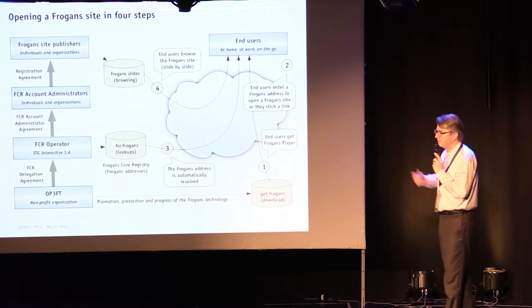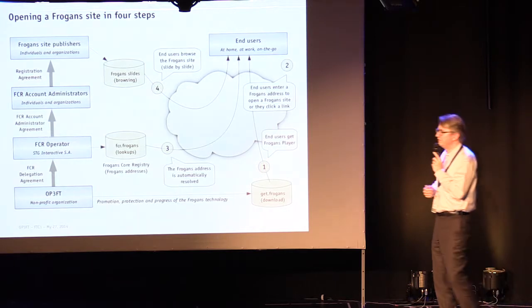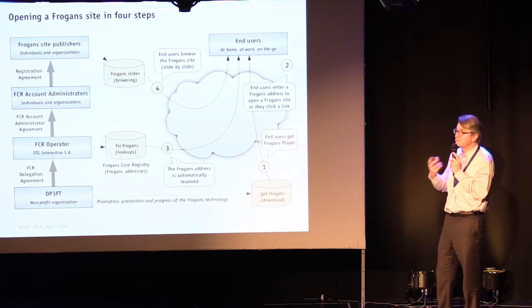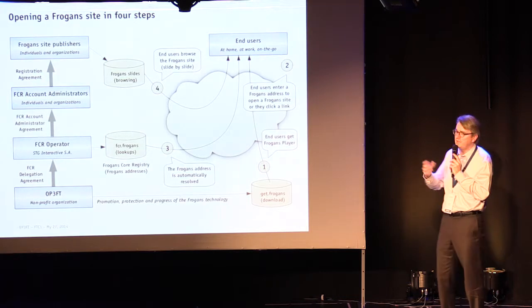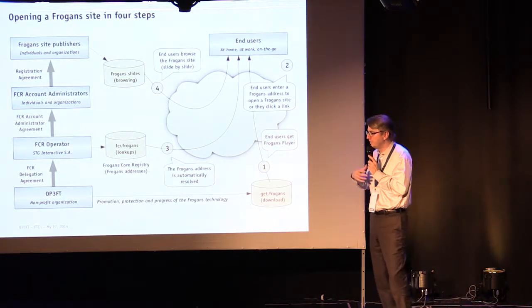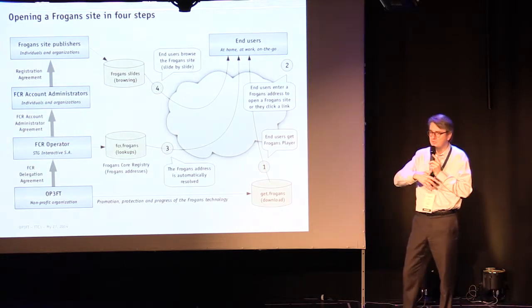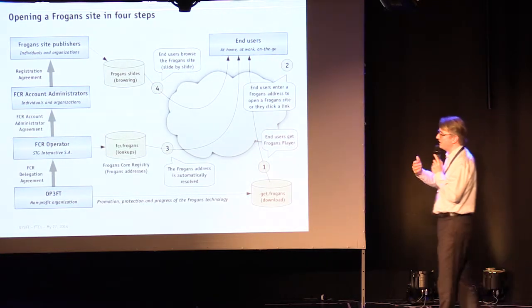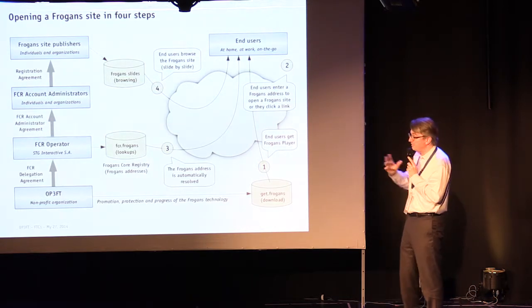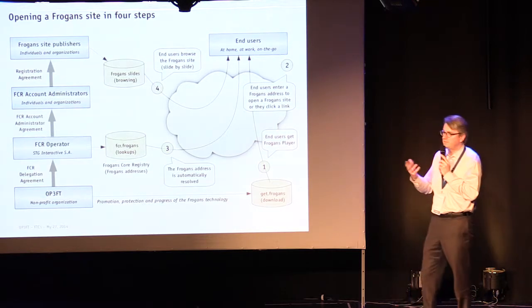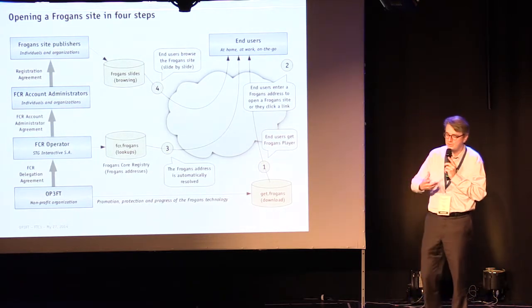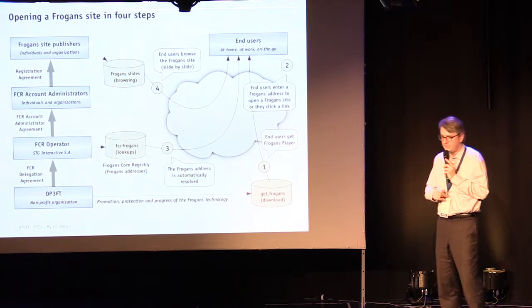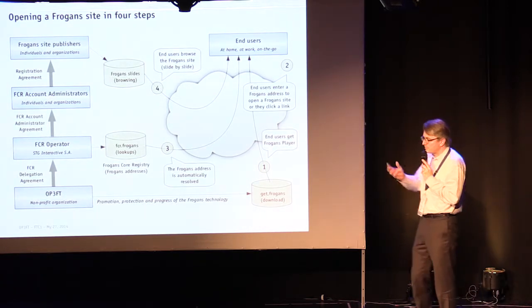The FROGANCE site is a number of pages or slides, each one coded and developed with the FSDL language based on XML. We tried our best to make it easy to use. When a technician says fairly easy, it's still likely to be difficult — but what we did is make FSDL manually encodable. At the beginning of the web, the inventors proposed a language that looked a bit like this; it's the same type of approach.